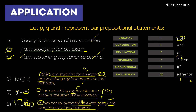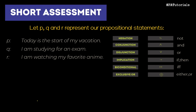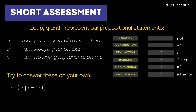I hope the lesson is clear. Now grab a pen and paper and answer this short assessment using the same P, Q, and R statements: Question 1: not-P implies not-R. Question 2: not-R implies Q. Question 3: R biconditional P. Please try to translate these. If you haven't gotten it yet, feel free to replay this video at your own pace. That's it for today — thanks for watching, please like and subscribe to my channel. Bye!